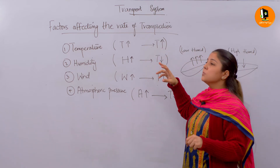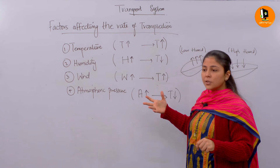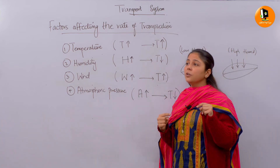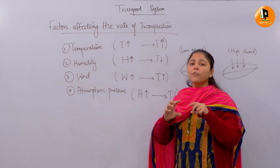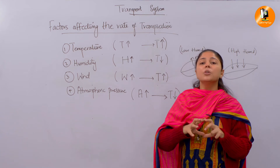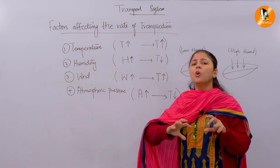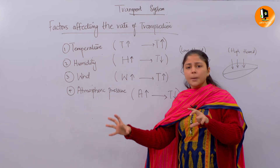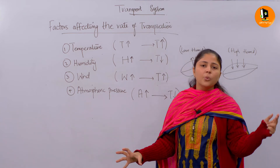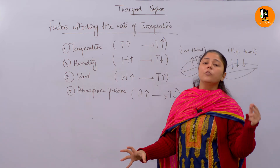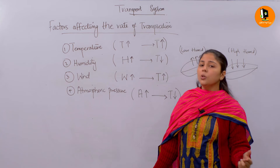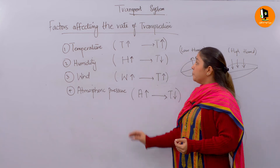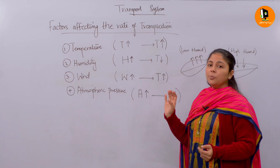More temperature favors more photosynthesis, but you must understand that if the temperature is above the optimum — above 37 or 38 degrees — the plant will not perform further photosynthesis. So the first factor, temperature, and transpiration rate are directly proportional.